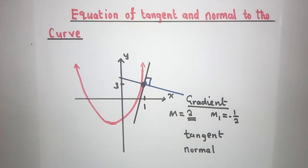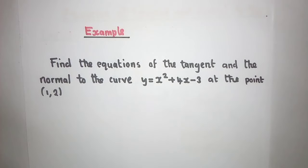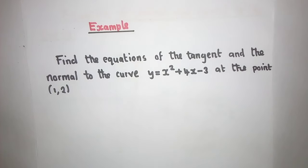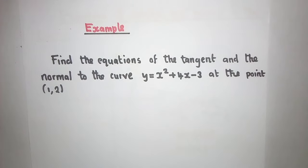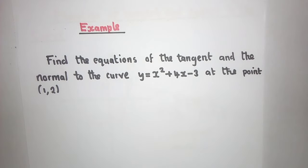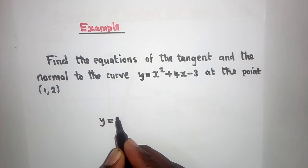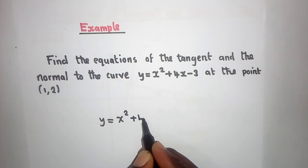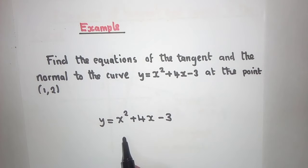So this is what you need to know when it comes to tangent and normal. Let's try to do an example. The question reads: find the equation of the tangent and the normal to the curve y = x² + 4x − 3. The first thing here must be to find the gradient, so how do we find the gradient? We differentiate — we find dy/dx.